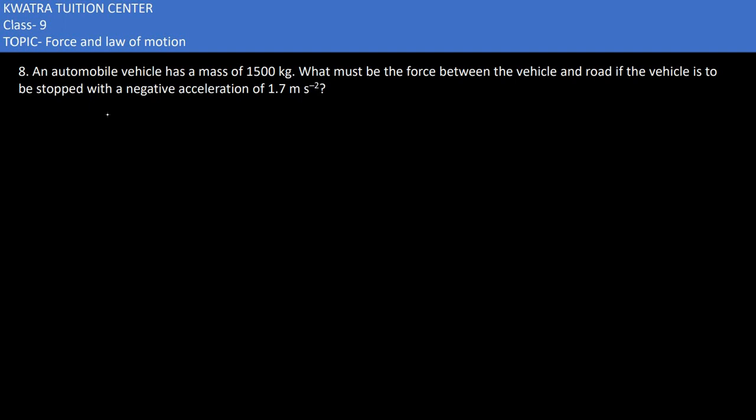Here in the eighth problem, we have an automobile vehicle with a mass of 1500 kg. What would be the force between the vehicle and the road if the vehicle is to be stopped with a negative acceleration of 1.7 meters per second squared?